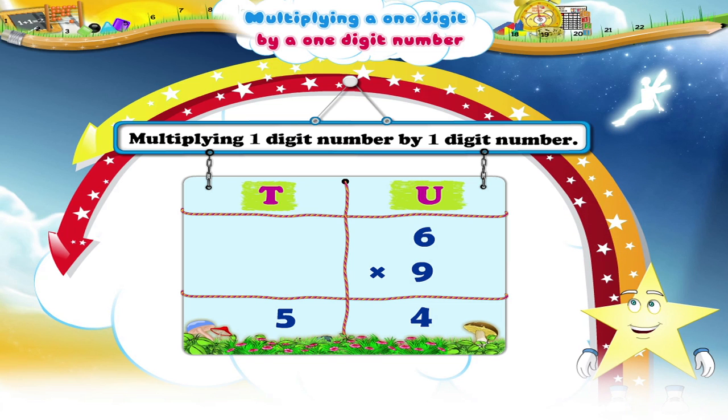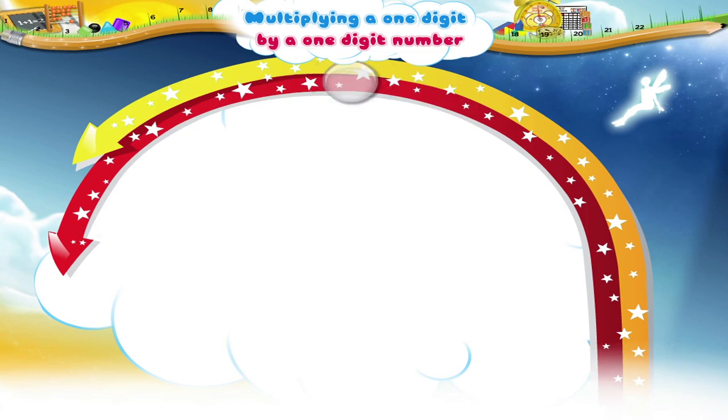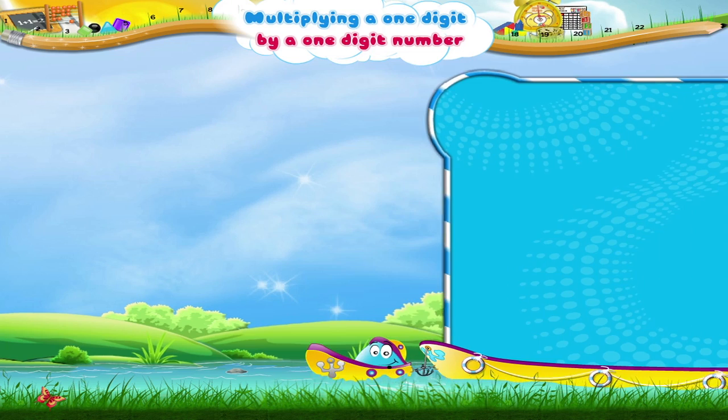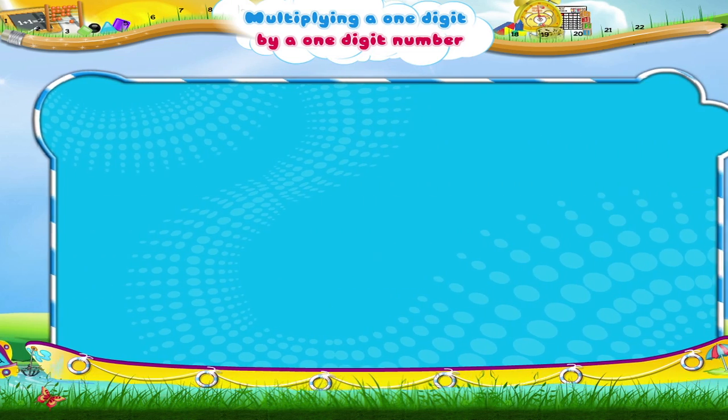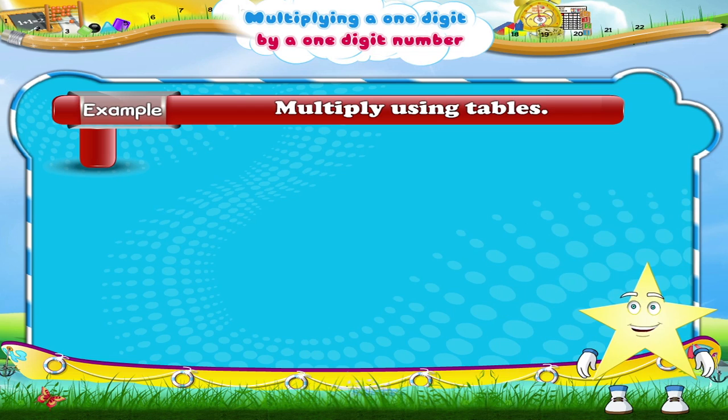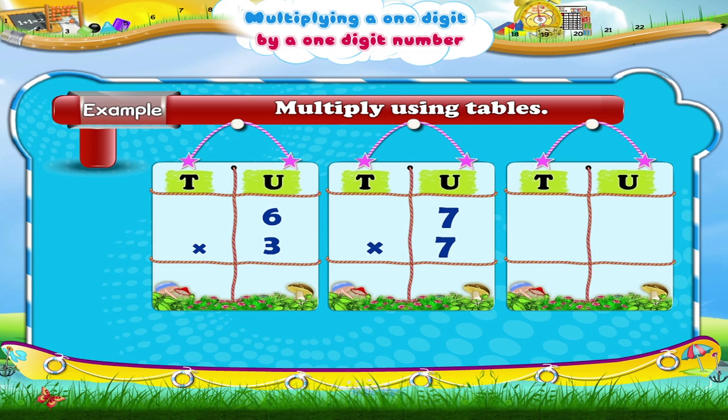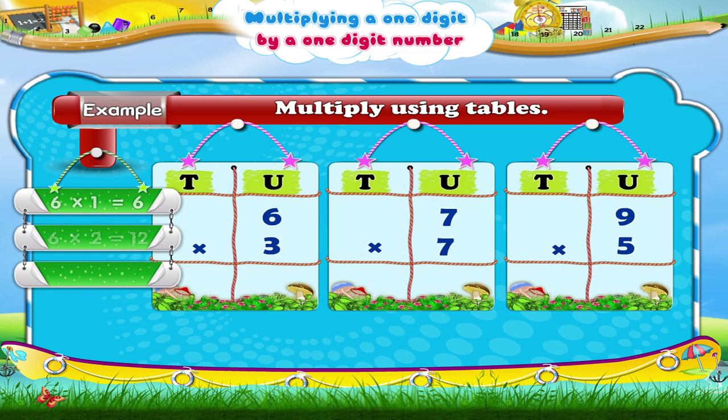Now let me see if you have understood what I have just taught you. Let's multiply using tables. In the first example we say the six times table till six threes. Six threes are eighteen. The product is eighteen.